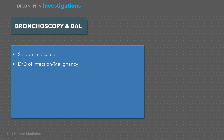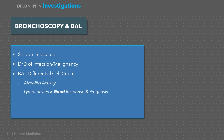Bronchoscopy is seldom indicated unless there is serious consideration of a differential diagnosis of infection or a malignant process. On bronchoalveolar lavage, the differential cell count is important as it indicates alveolitis activity. If lymphocytes are predominant, it indicates a good response and prognosis. If neutrophils or eosinophils are present in larger quantities, they indicate poor response and poor prognosis.